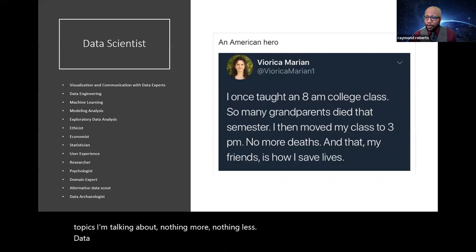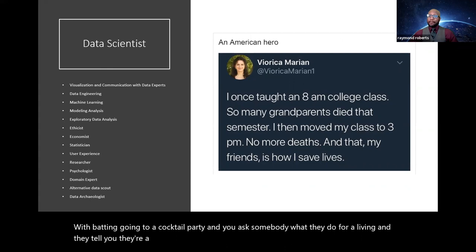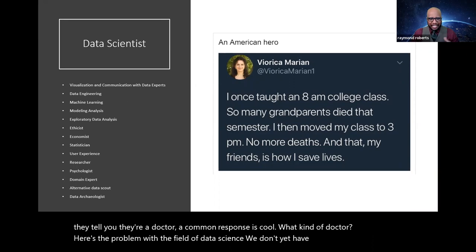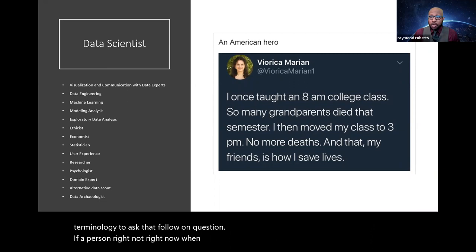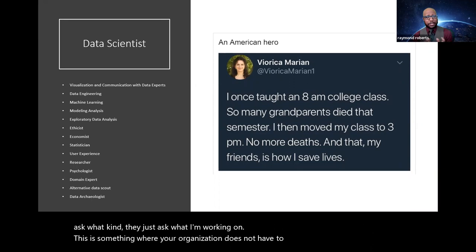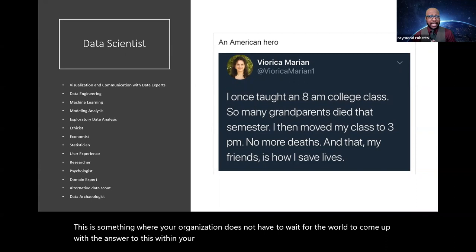Data scientist. This is one I often open conversations with when people ask what data theory is about. Imagine going to a cocktail party, you ask somebody what they do for a living, and they tell you they're a doctor. A common response is, cool, what kind of doctor? Here's the problem with the field of data science. We don't yet have that definitive terminology to ask that follow-up question. If a person right now, when I tell someone I'm a data scientist, more often than not, I get asked, what is a data scientist? If the person has heard the term before, they don't ask what kind. They just ask what I'm working on. This is something where your organization does not have to wait for the world to come up with the answer to this. Within your organization, you can start saying what kinds of data scientists you have.